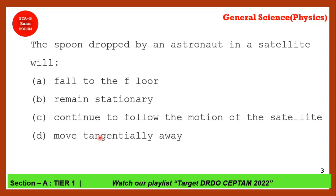A spoon dropped by an astronaut in a satellite — what will happen to it? It will not fall to the floor because there is no gravity. The correct answer is that it will continue to follow the motion of the satellite. The spoon experiences the same motion as the satellite and will not move tangentially. Option C is the correct answer.